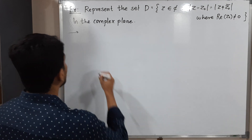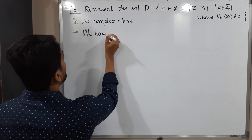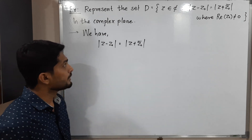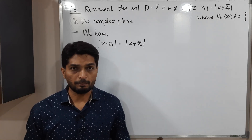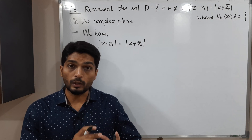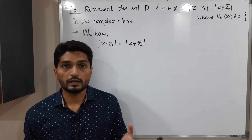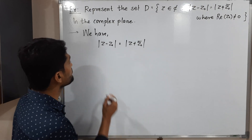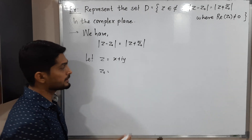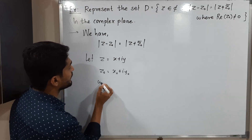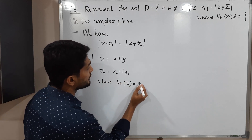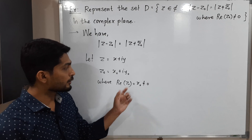We start with the condition mod Z minus Z naught equals mod Z plus Z naught bar. We know any complex number can be expressed in Cartesian form, polar form, or exponential form. We will use Cartesian form: let Z equal X plus iY, and let Z naught equal X naught plus iY naught, where the real part of Z naught, which is X naught, is non-zero.